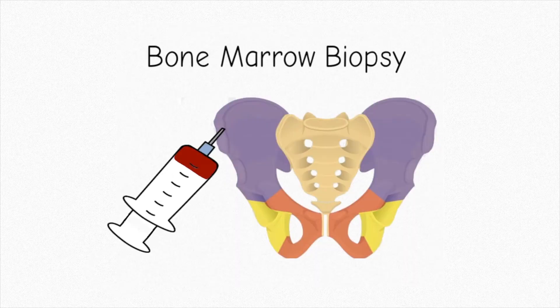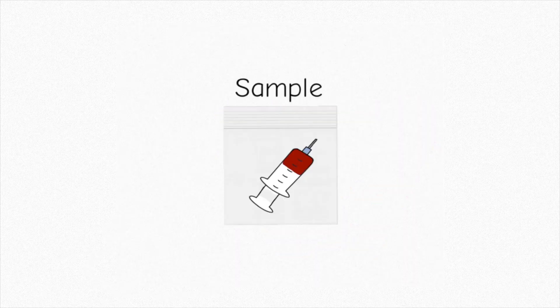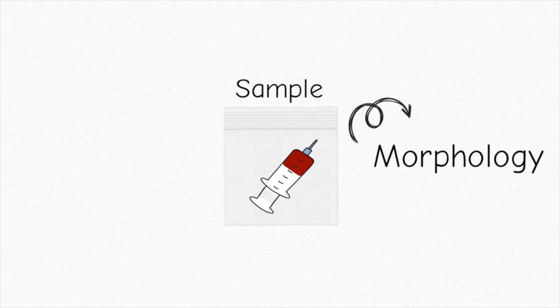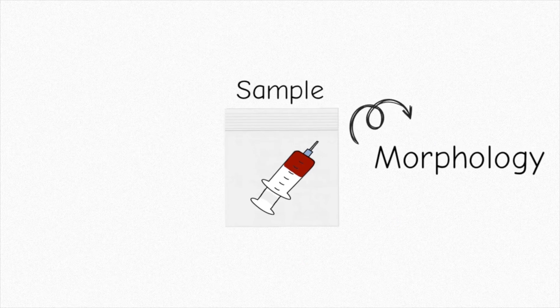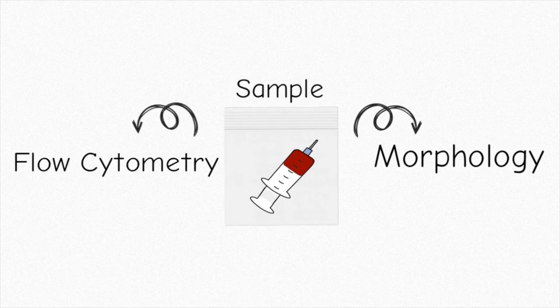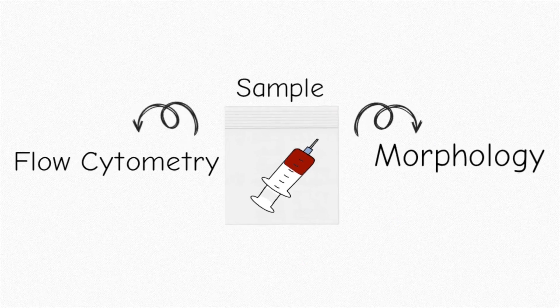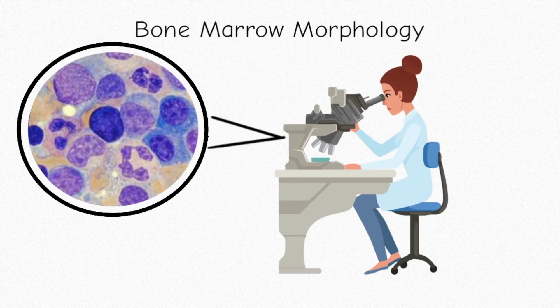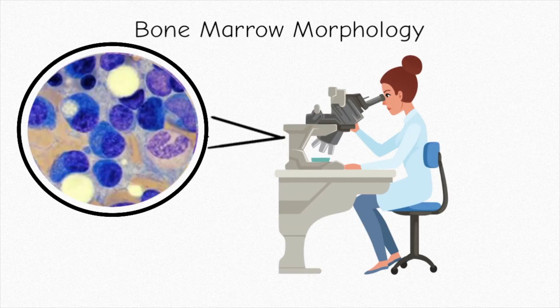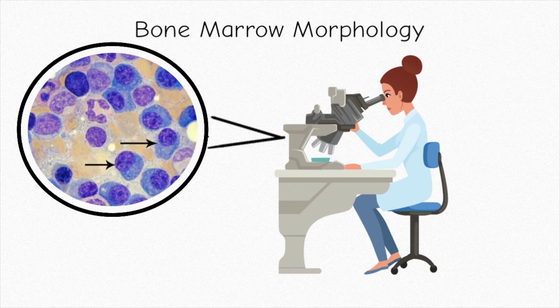After you get your bone marrow biopsy, your sample is analyzed in two different ways: by morphology and by flow cytometry. To analyze bone marrow morphology, a pathologist looks at your sample on a slide under a microscope.